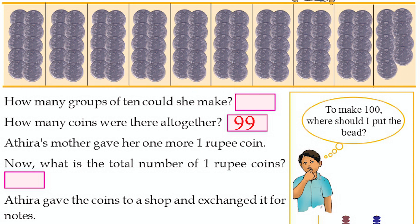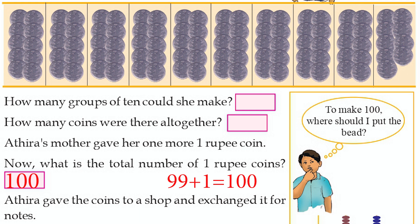Adira's mother gave her one more 1 rupee coin. What is the total number of 1 rupee coins now? 99 coins plus 1 coin equals 100 coins.